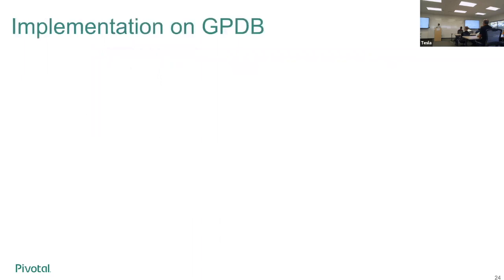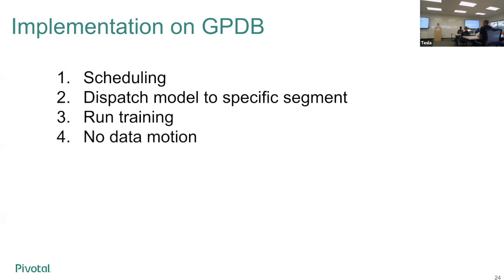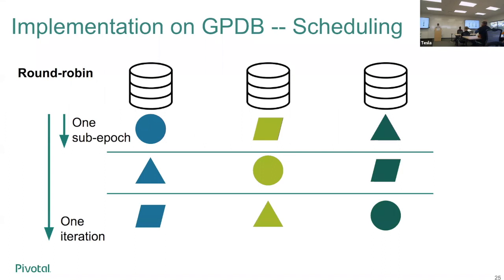Now, how do we incorporate this into MATLAB and make it work on GPDB? There are several things to worry about. First, scheduling: how do we decide the allocation of tasks and the order in which we hop the model. Second, how do we actually do the model hopping — a mechanism to dispatch the model to a specific segment. Third, how do we run the training without unnecessary data motion. For now the scheduling is done in a simple round-robin fashion, with lots of room for future improvement.